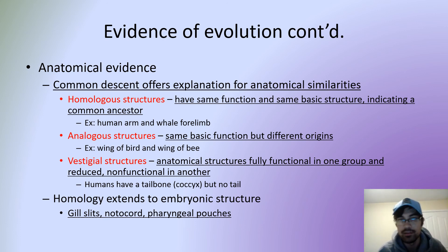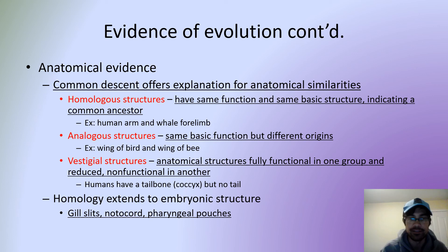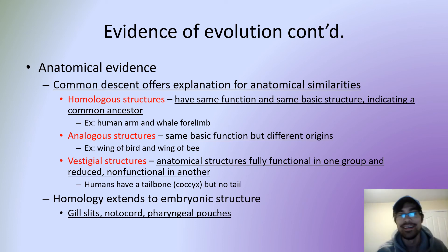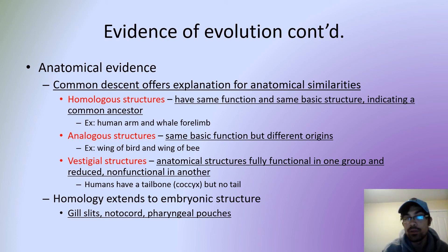The last bit is the anatomical evidence — there are anatomical similarities between related species. You have homologous structures, which tend to have the same function and the same basic structure, indicating a common ancestor. For example, a human's arm and the fin of a whale have similarities in layout — the same types of bones and similar placement — even though the actual proportions are quite different, with humans having much longer arm bones.